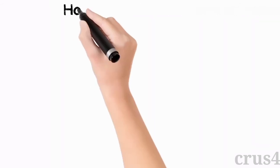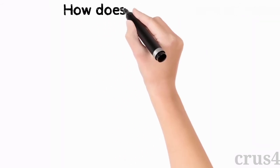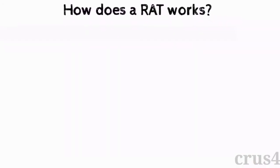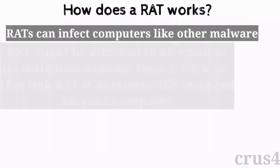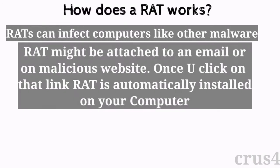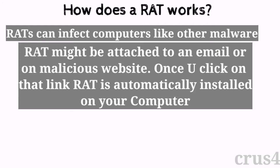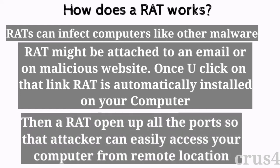Now let's see how a RAT works. RATs can infect computers like other malware — they might be attached to an email or on a malicious website. Once you click on that link, a RAT is automatically installed on your computer. Then the RAT opens up all the ports and access methods on your computer, so an attacker can easily access your computer or phone from a remote location.